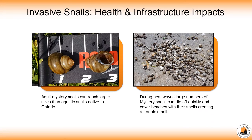Mystery Snails can be a threat to human health and infrastructure. Populations of Chinese Mystery Snails have been known to reach large densities — up to 40 snails per square meter. This creates two main problems for humans: Mystery Snails can carry and transmit parasites to people and wildlife, and their large size means they can clog water intake pipes when found in large numbers.